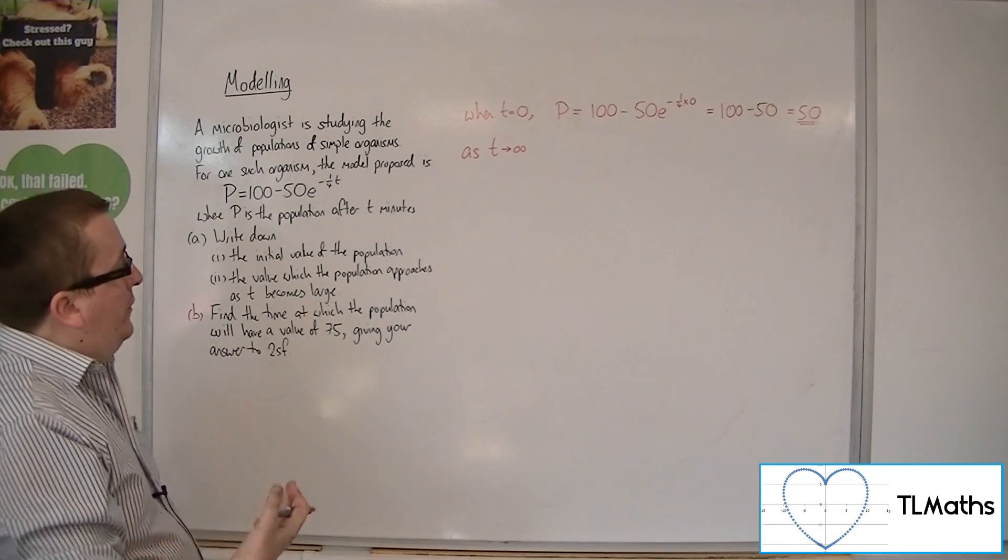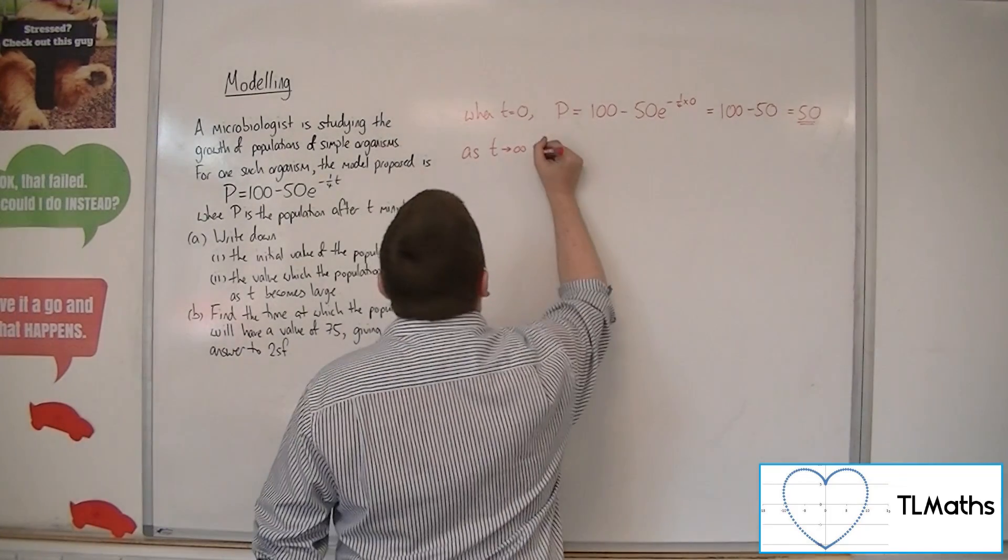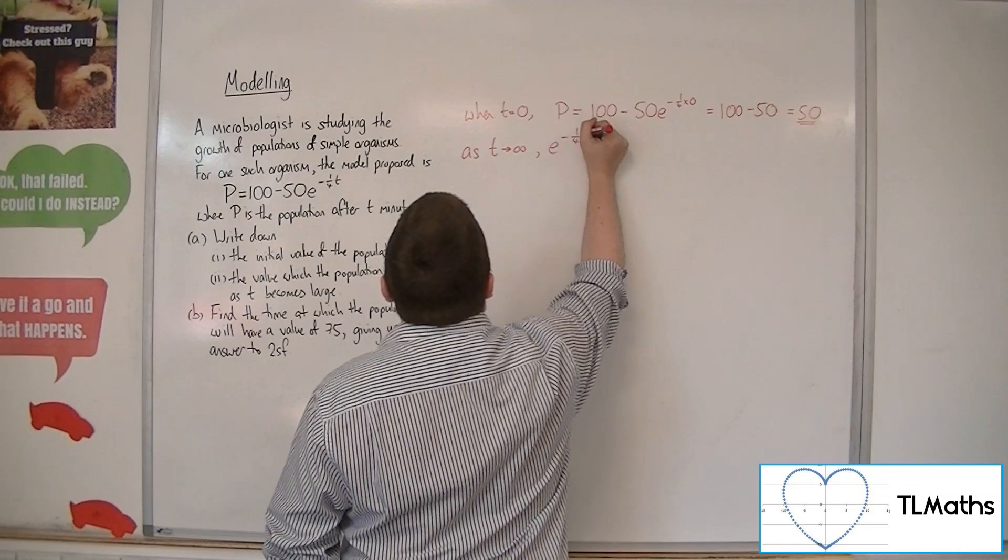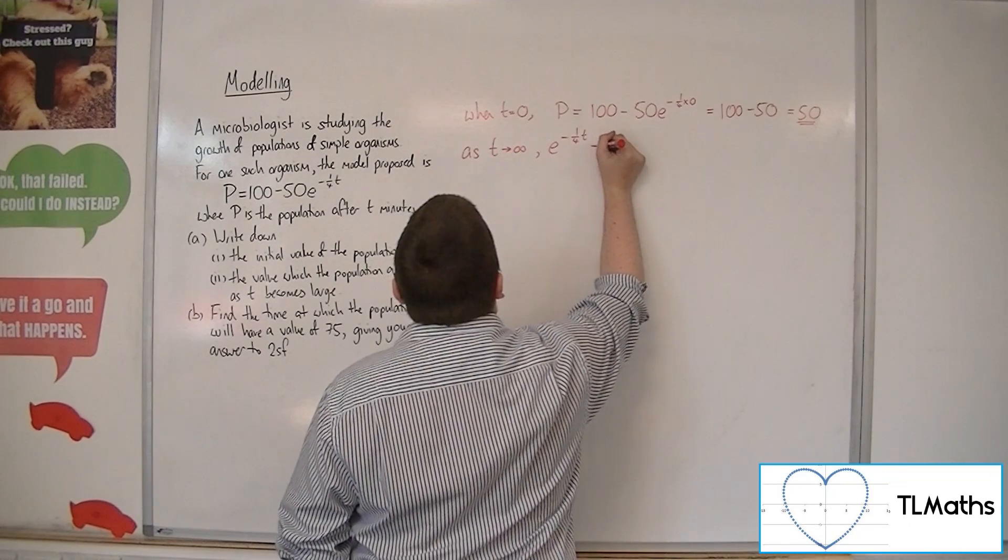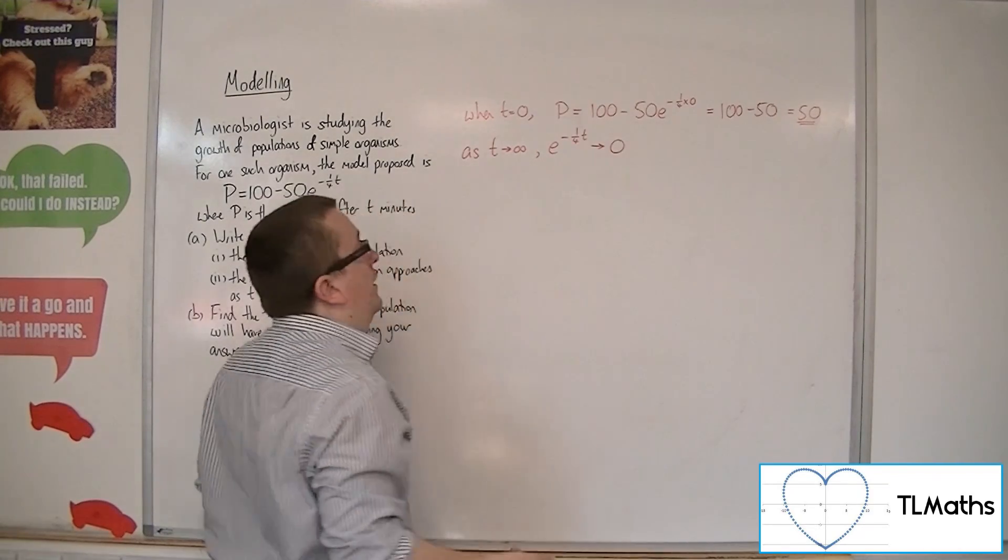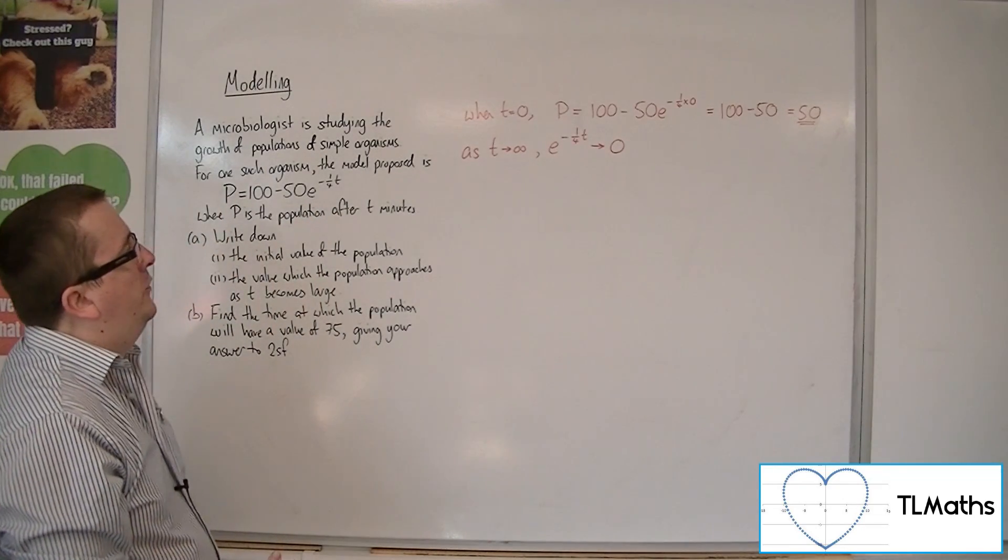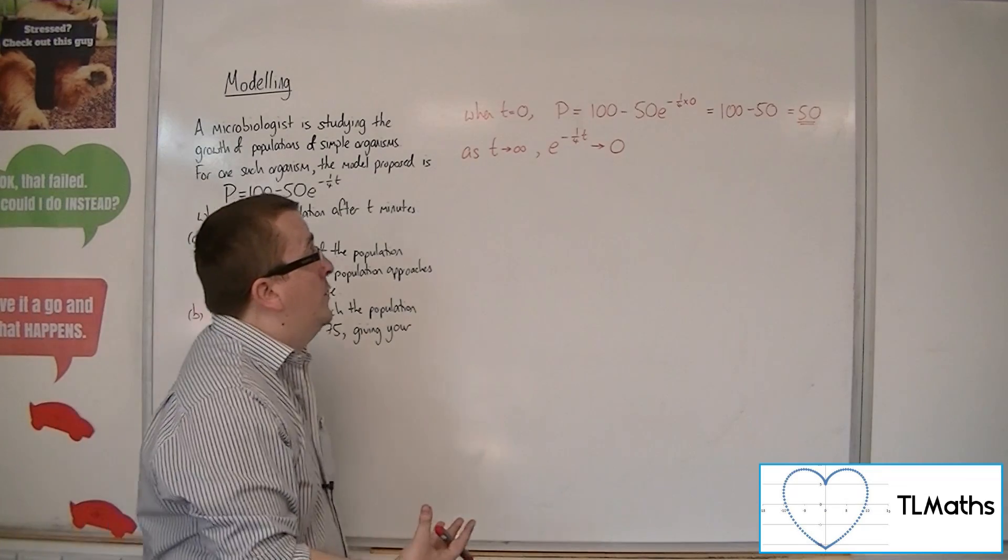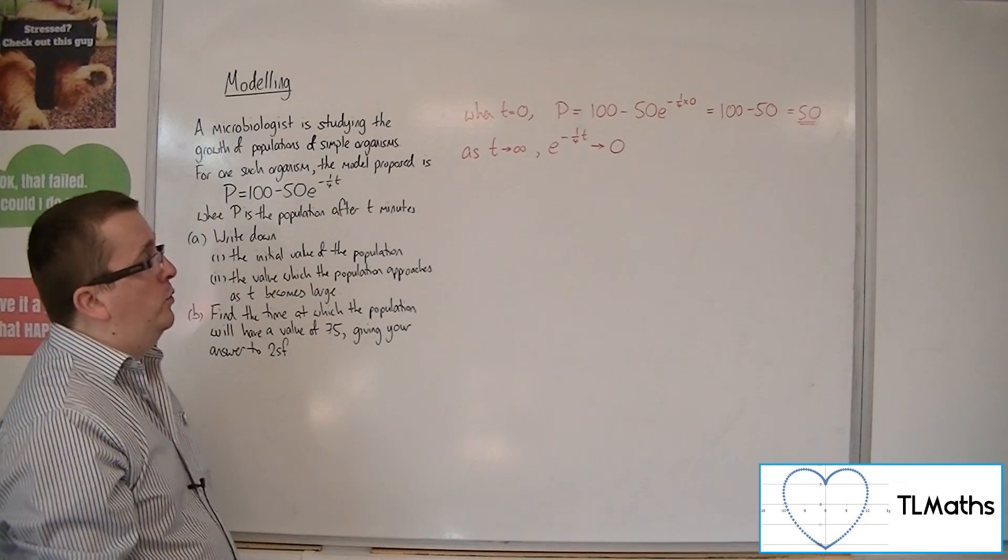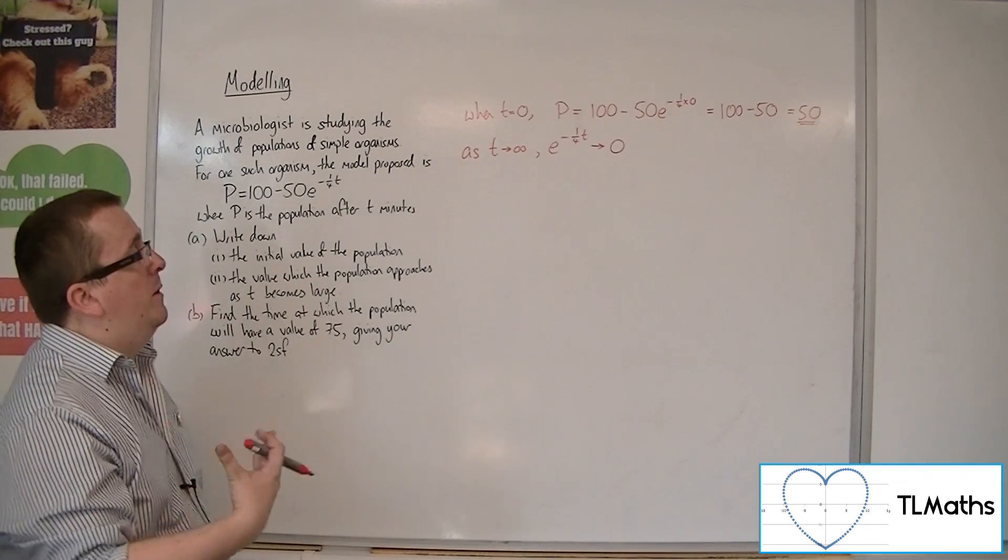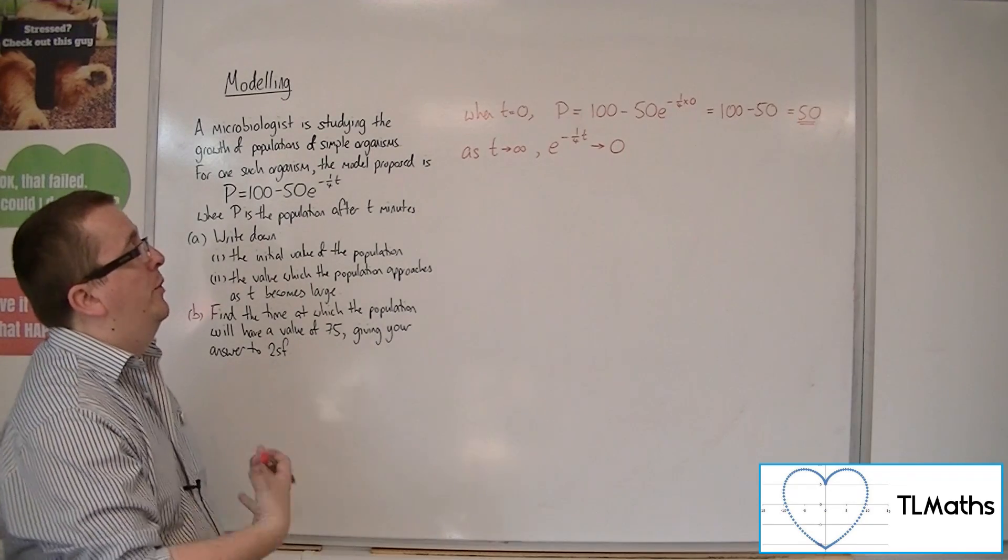Now as t gets larger, e to the minus a quarter t gets smaller and smaller and smaller and approaches 0. So you can try that in your calculator. Try e to the minus a quarter times 100 or e to the minus a quarter times 1000 and so on and so forth.